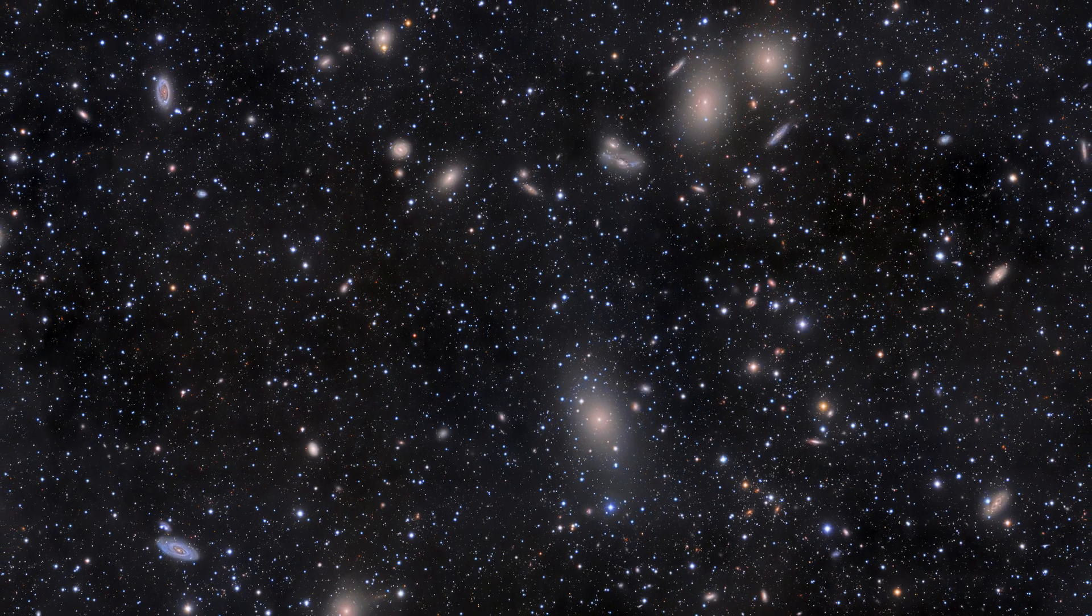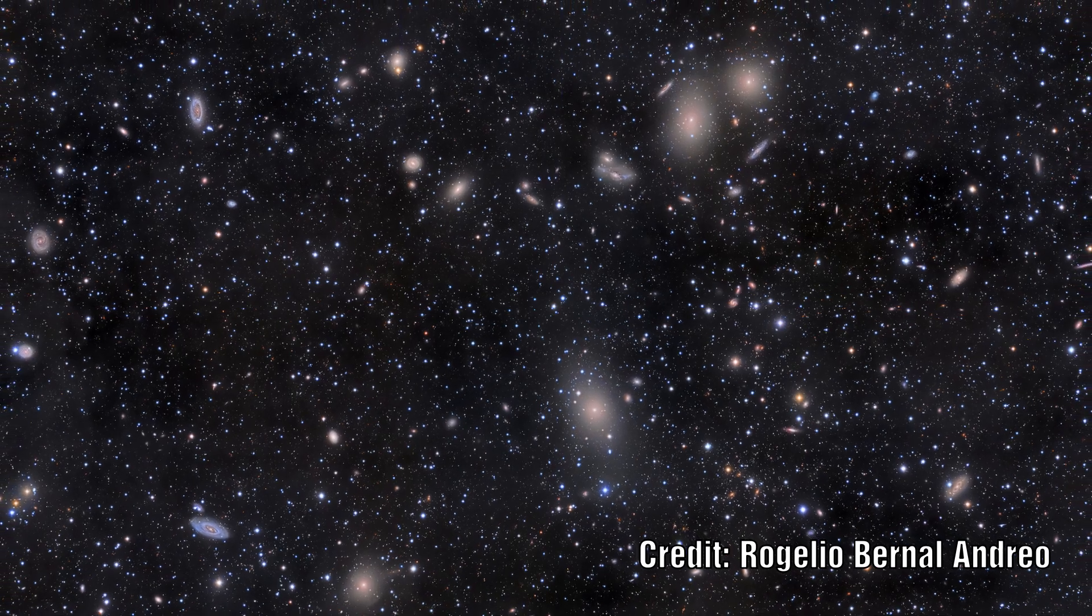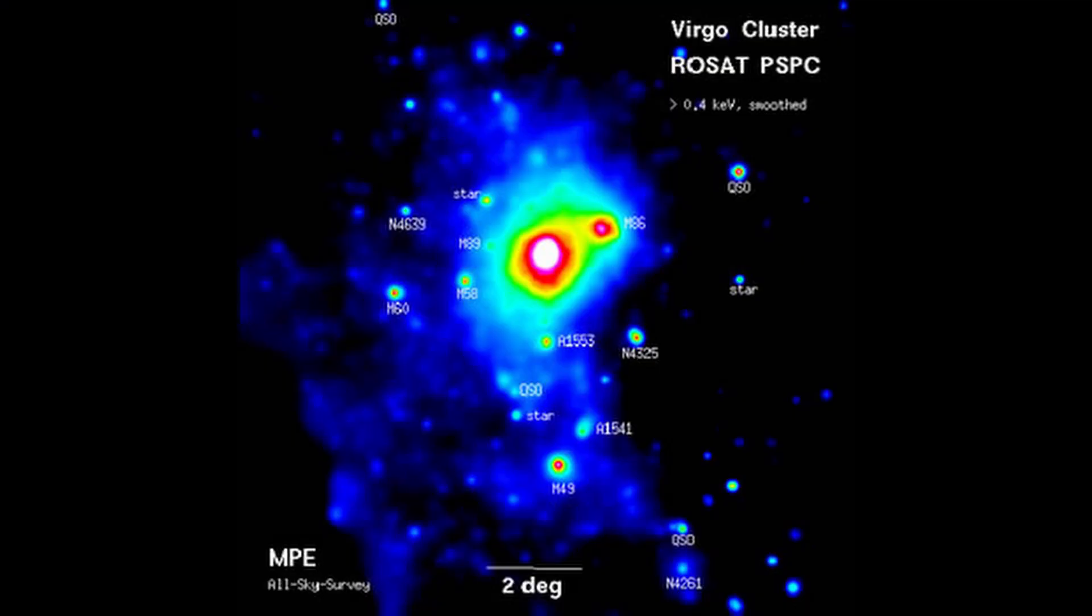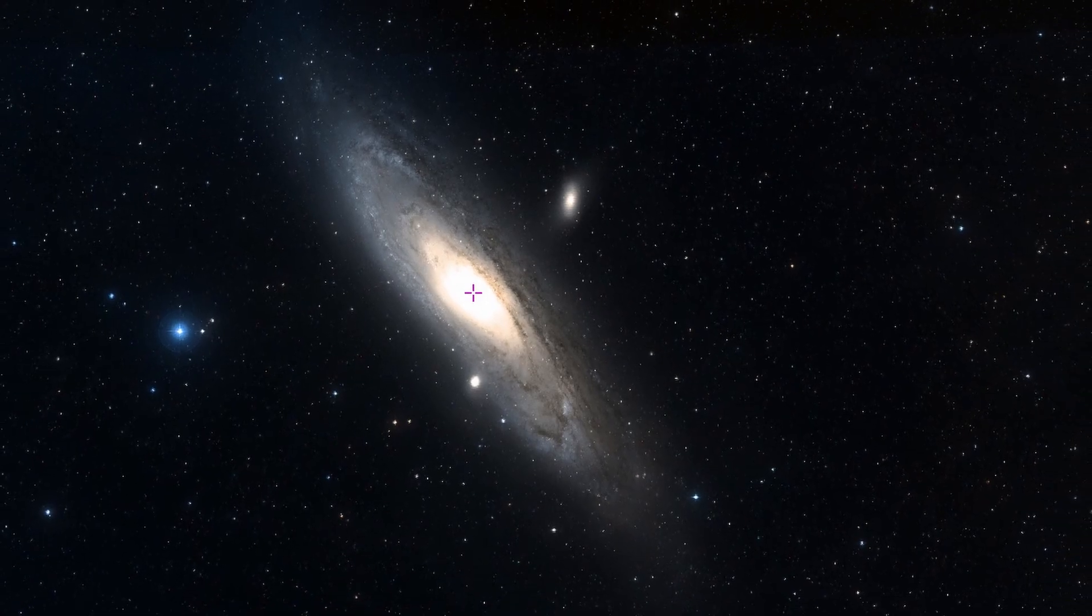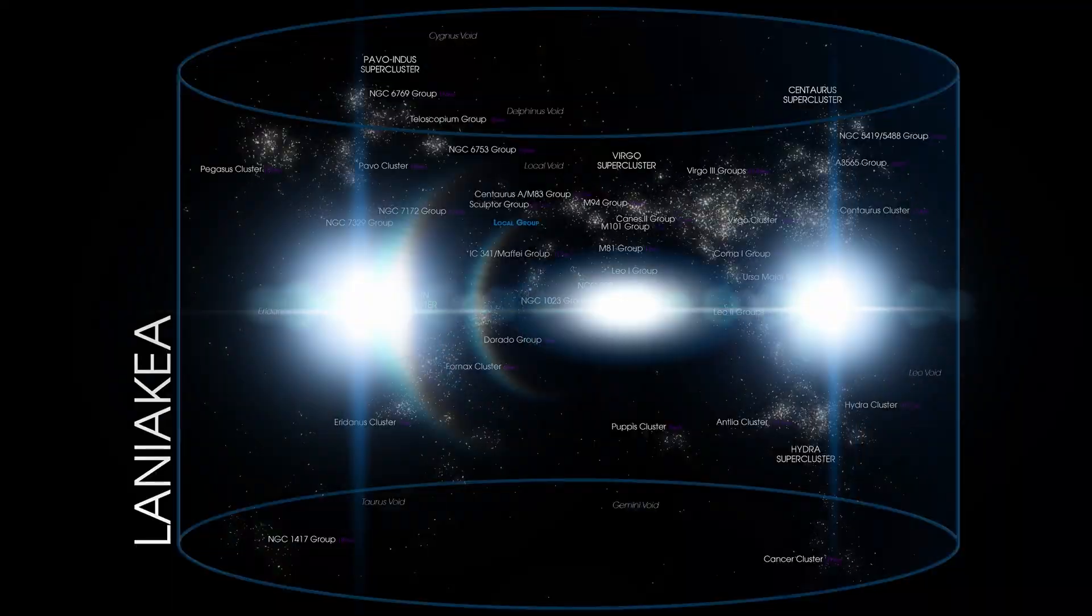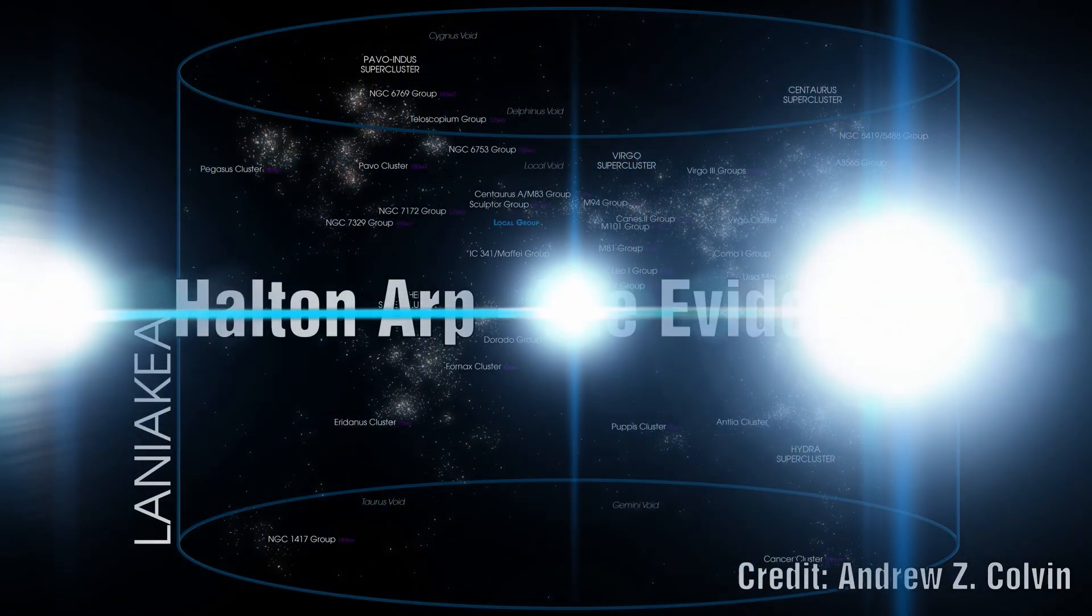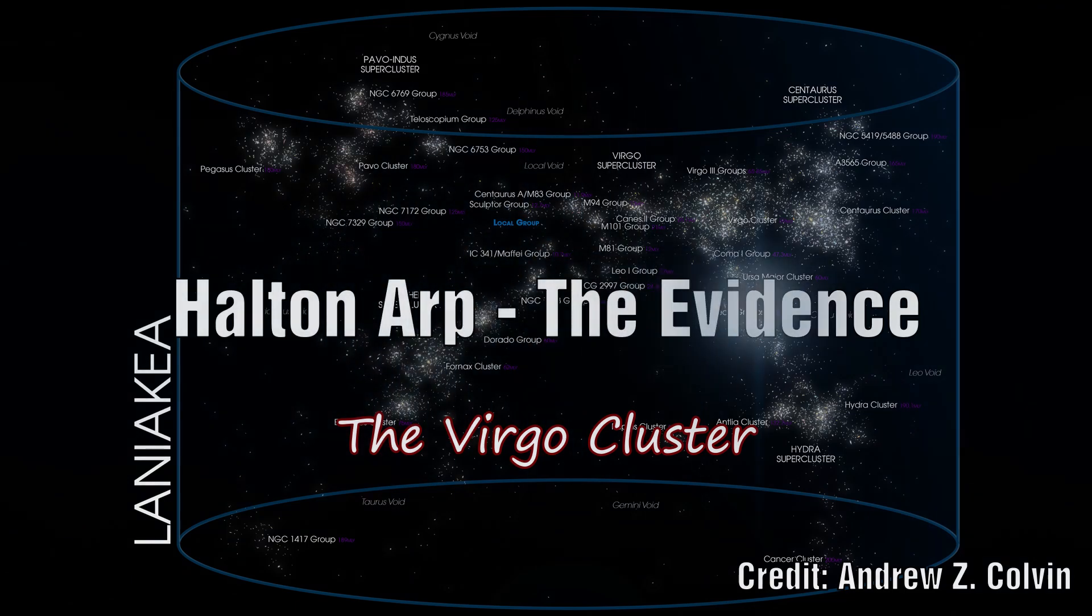The Virgo cluster is the center of the largest physical aggregate of galaxies we can study in detail. We will use our understanding from previous episodes where we saw higher redshift for companion galaxies and examine how the Virgo cluster is structured and how it might well be evolving.